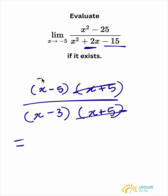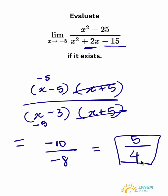Now use direct substitution. Negative 5 in here, negative 5 in here. We get negative 10 over negative 8, which simplifies down to 5 fourths. That's our final answer.